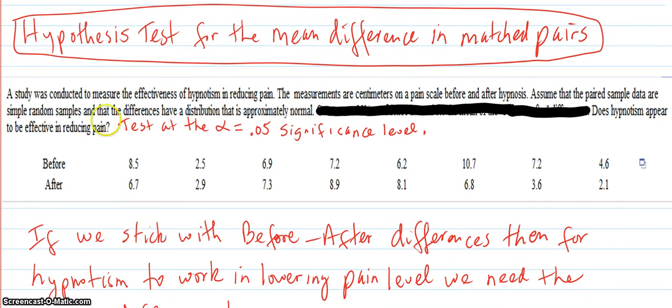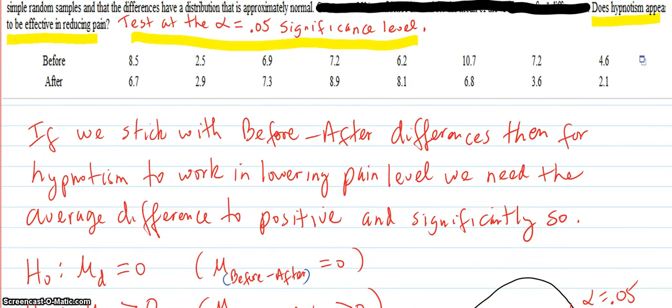So same, everything's the same. The same data. I just asked a different question. Does hypnotism appear to be effective in reducing pain? Test at the alpha 0.05 significance level. I put that in there.